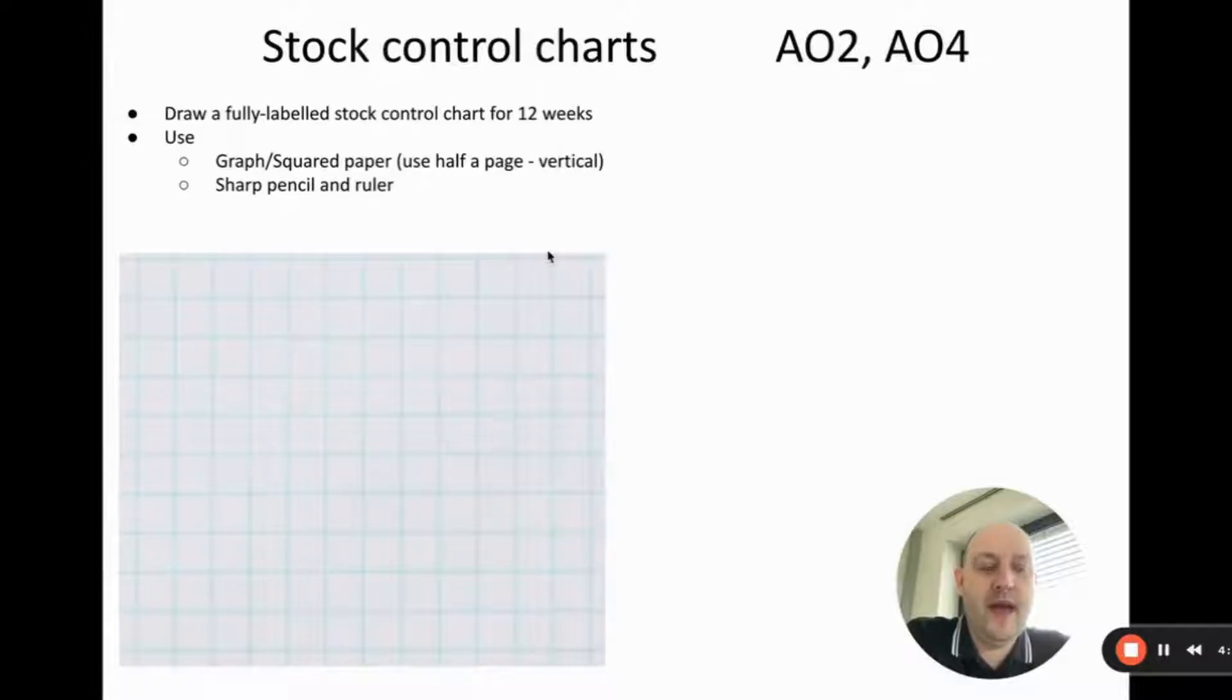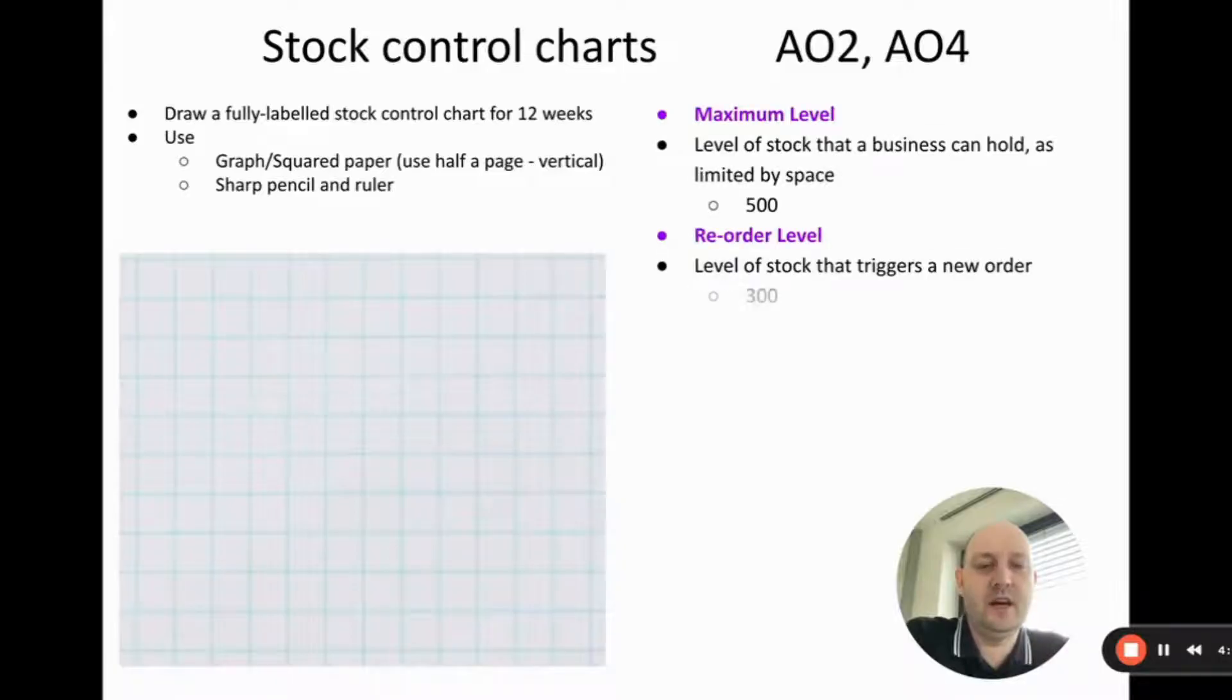We're going to go ahead and draw one of these stock control charts. The question might say something like, draw a fully labeled stock control chart for 12 weeks. You're going to want to draw this on graph or squared paper, an accurate drawn-to-scale diagram. Use a sharp pencil and ruler. You're going to be given certain information. The maximum level is the maximum level of stock that a business can hold, and this is limited by space. Here we're going to use the number 500. This might be 500 kilograms or 500 million.